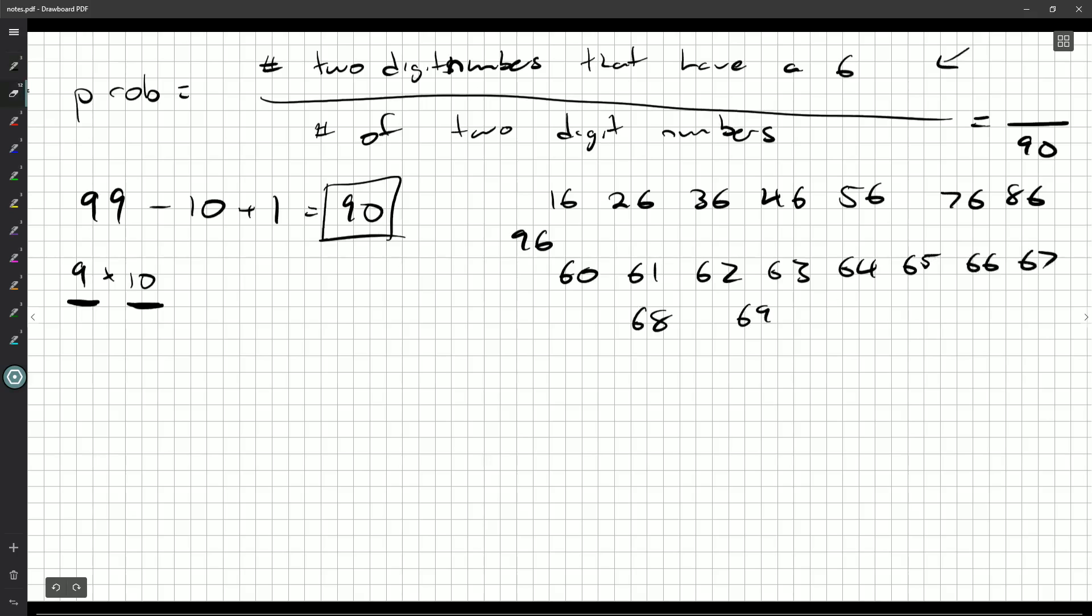And we could count them up from there. How many? 2, 4, 6, 8, 10, 12, 14, 16, 18 of them. So you do 18 out of 90 that way.